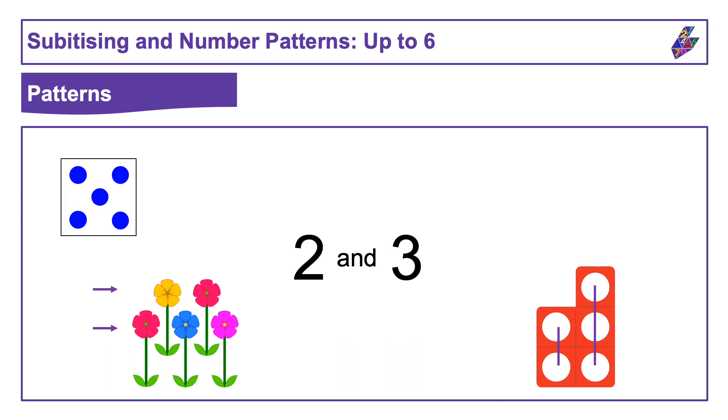With the dice pattern, instead of seeing it as one group of five, you might have seen it as a three, picturing a shape a bit like a triangle in your mind, and then another two. On the five frame you might have also seen a group of three yellow dots and a group of two blue dots.